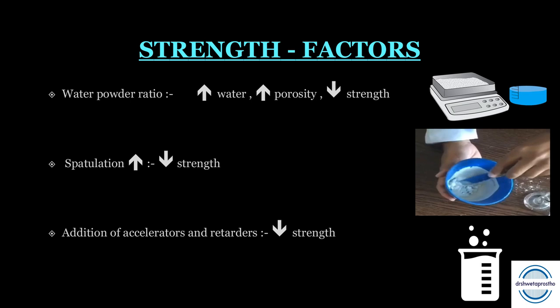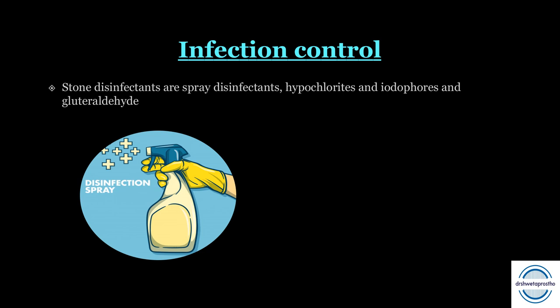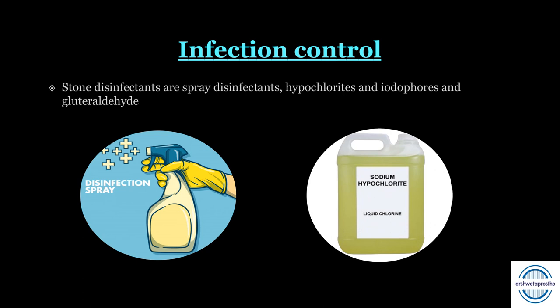To reduce cross-infection, infection control is essential. Disinfect the impression and the cast. You can spray with iodophor or a chlorine product then rinse, or soak the cast in 0.5% sodium hypochlorite for 30 minutes along with saturated calcium sulfate dihydrate solution — because gypsum is soluble in water, this ensures surface hardness is not lost.